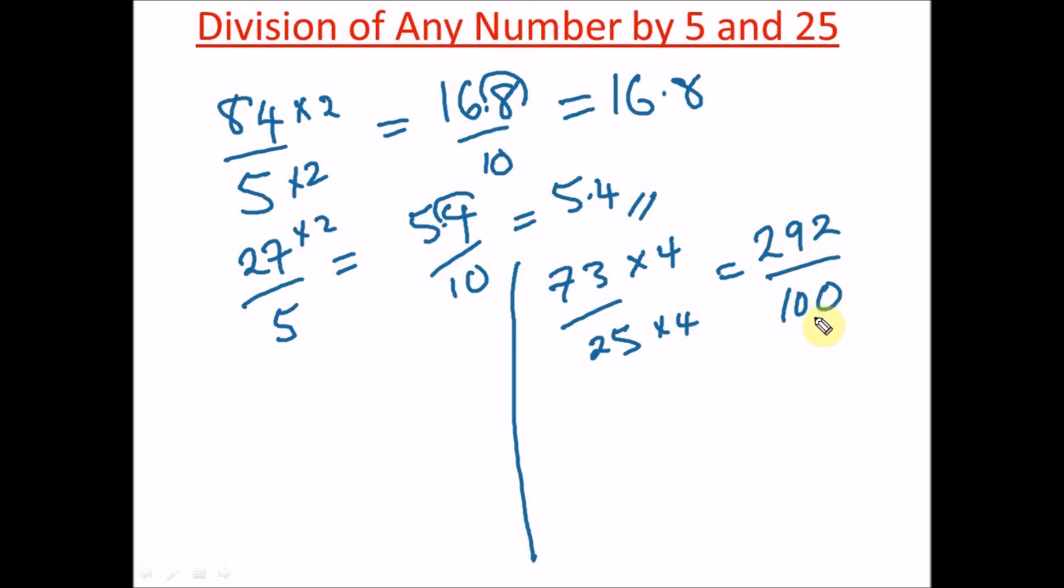When you divide this, we're going to move the decimal place two places, and our answer is 2.92. Another example: let's say we have 91 divided by 25.